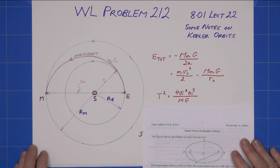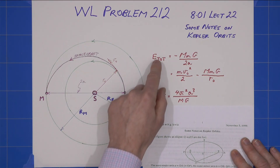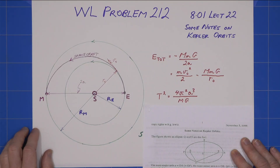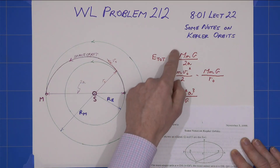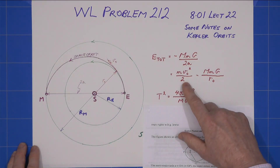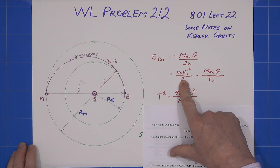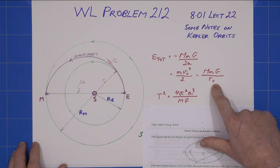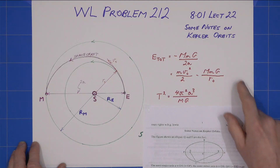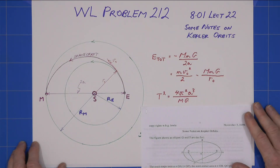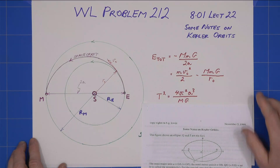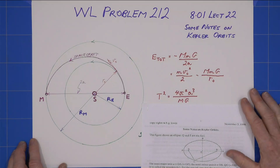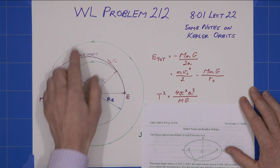From lecture 22 we learn about the total mechanical energy of an orbit, given by this expression, which must equal the kinetic energy plus the gravitational potential energy. Note that gravitational potential energy is always negative, so for a bound orbit our total mechanical energy will be negative as well.